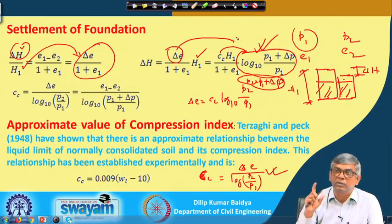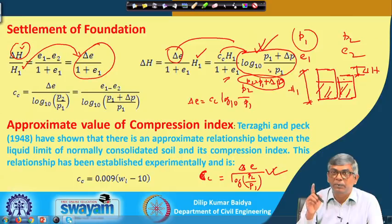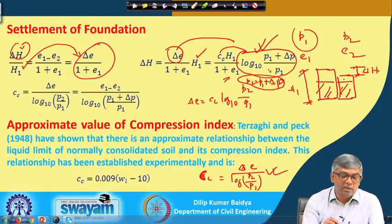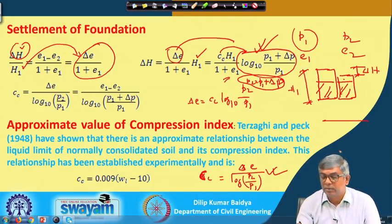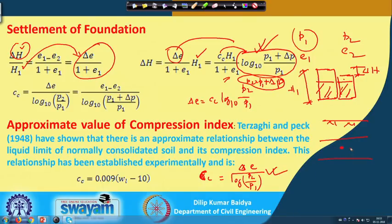H1 is the thickness of the consolidating layer and is known. The initial void ratio E1 can also be determined. P1 is the initial overburden pressure — if this is the ground surface and the clay layer is below, I find the weight of the soil above. So P1 equals gamma1 times H1 plus gamma2 times H2; when there is a water table, effective unit weight must be used.